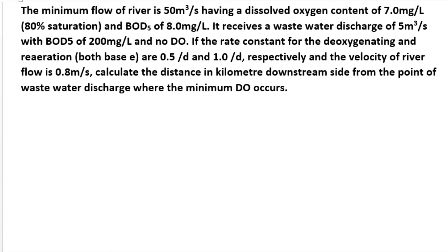The problem is: the minimum flow of river is 50 meter cube per second having a dissolved oxygen content of 7.0 milligram per liter, that is 80 percentage of saturation, and BOD₅ (BOD after 5 days) is 8 milligram per liter. It receives a wastewater discharge of 5 MQ per second with BOD₅ of 200 milligram per liter and no dissolved oxygen.